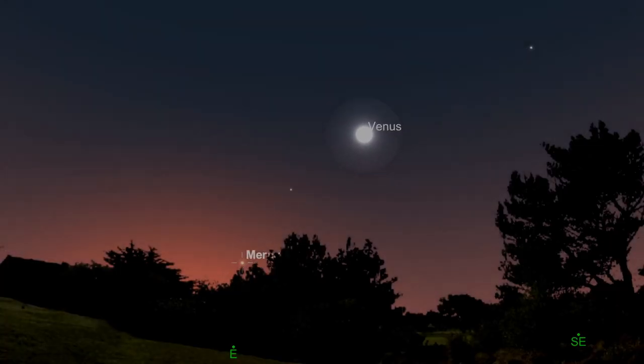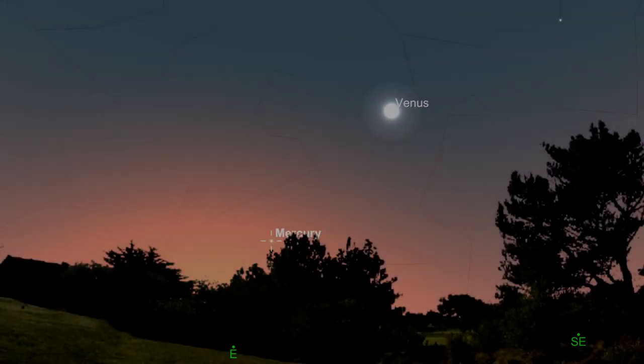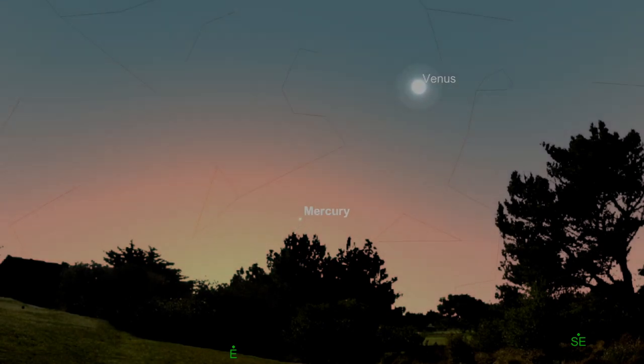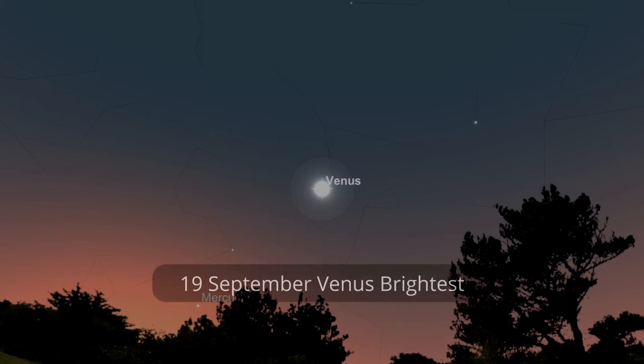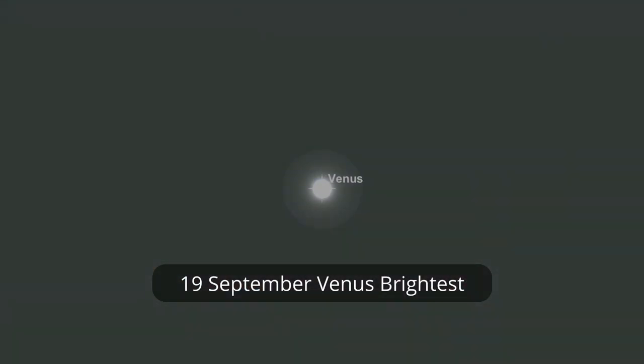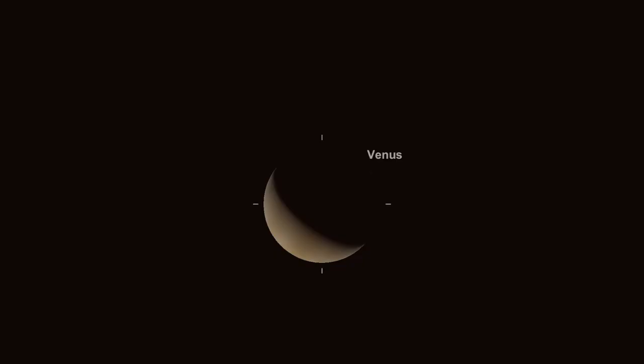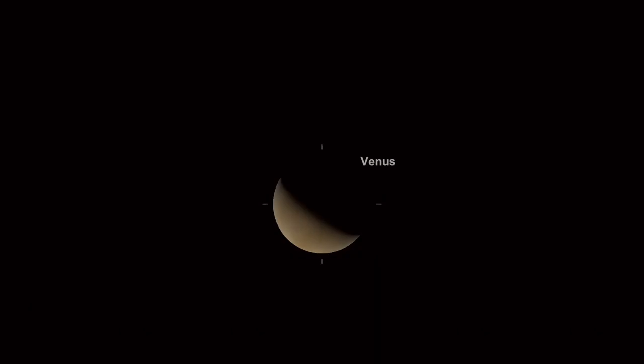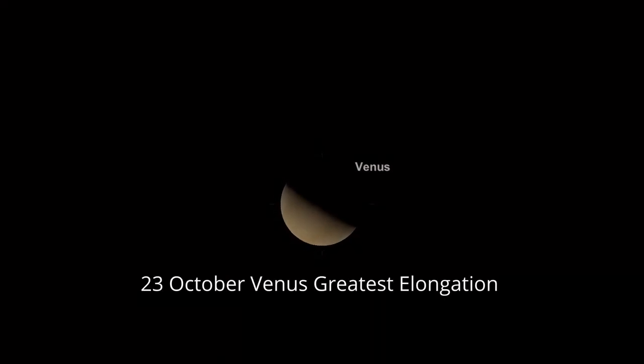Swinging over to the morning sky we've got Venus. Venus is now pulling away from the sun. It passed underneath the sun in August and it's now becoming a morning object. It's going to be at its brightest on the 19th of September when it's at about 25% phase and then it's at its greatest elongation actually next month on the 23rd of October. That's when it's at 50% phase. It's actually then going to start getting smaller and further away as it prepares to go around the far side of the sun.